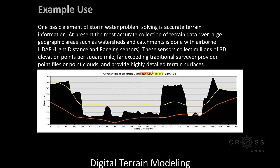One basic element of stormwater problem solving is accurate terrain information. The most accurate collection of terrain data over large geographic areas such as watersheds and catchments is done with airborne LIDAR, which collects millions of 3D elevation points per square mile, far exceeding traditional surveyor point files, and provides highly detailed terrain surfaces. You can see in this profile that the 30-meter resolution, 10-meter resolution, and 2-meter LIDAR resolution produce noticeably different results — flood volumes could potentially be incorrectly calculated using lower-resolution data.